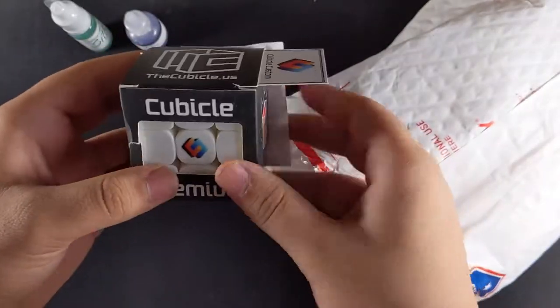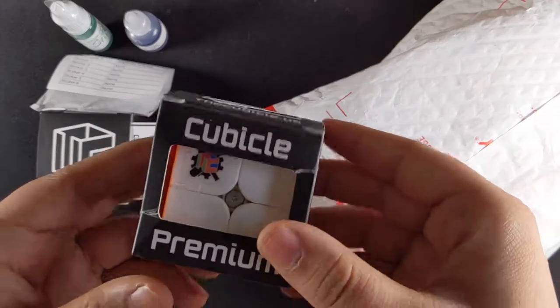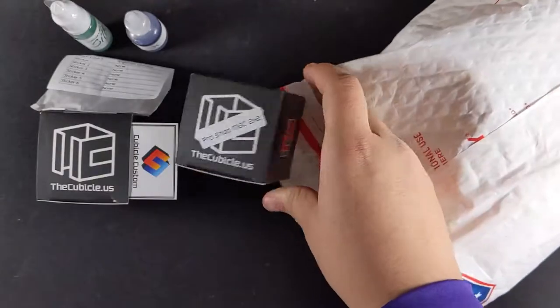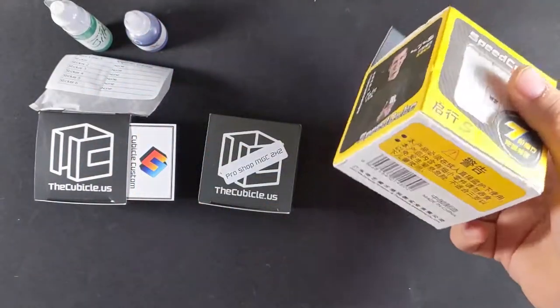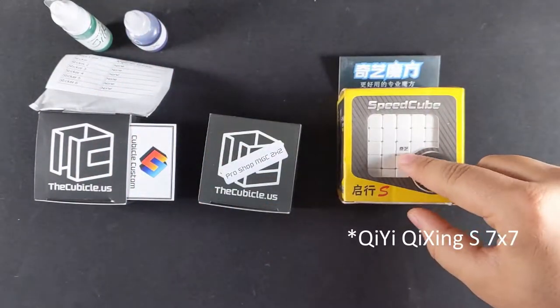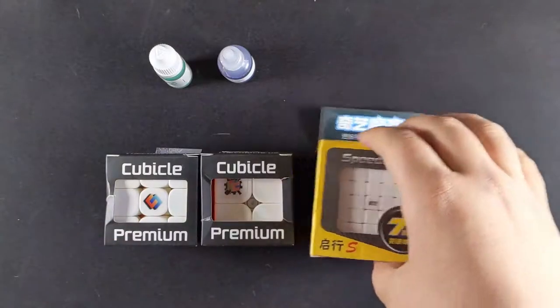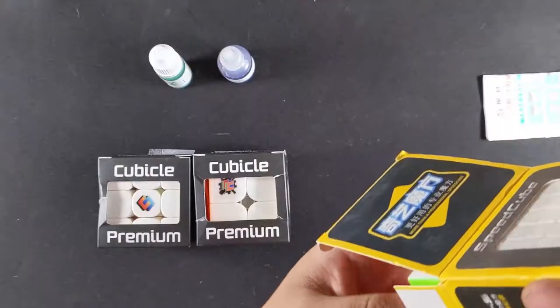Alright, this is the MF3RS3, and this is the MGC2 from ProShop. But this is, I forget the name, but this is a Qi 7x7. I guess I'll start off with the 7x7. Let's open it up.